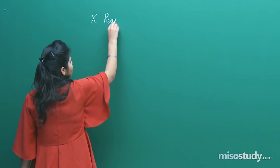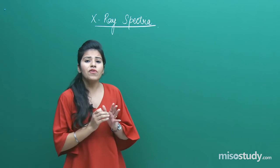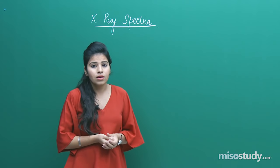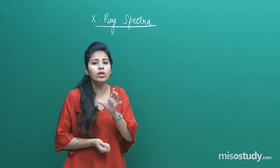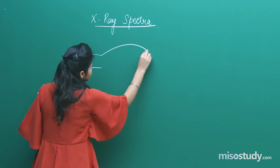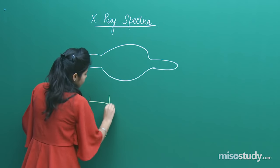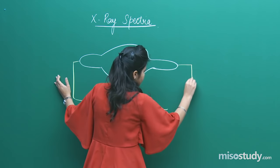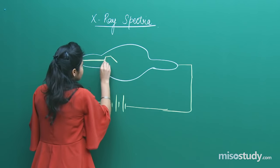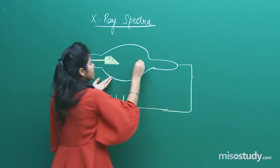If I talk about x-ray spectra, there is something we should learn before starting — what will be the frequency and wavelength of the x-rays being generated? We learned about the Coolidge x-ray tube in the previous class. Let me draw the x-ray tube again. Inside this tube there is a metal surface.